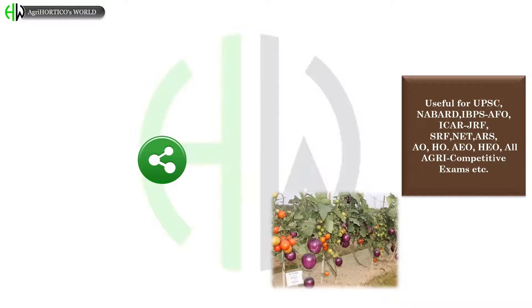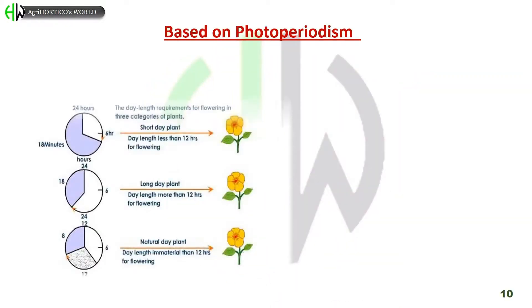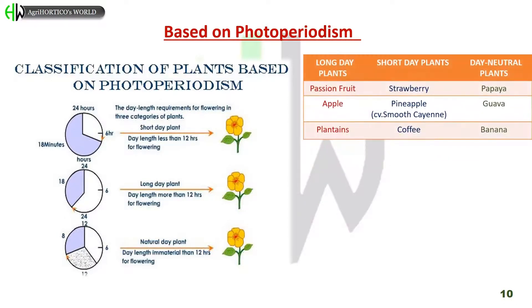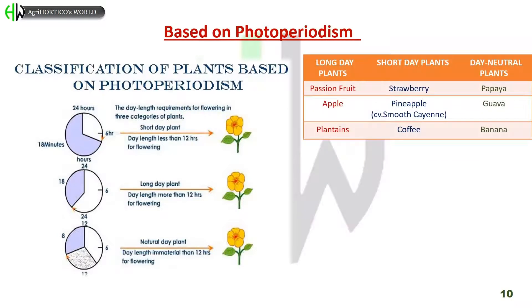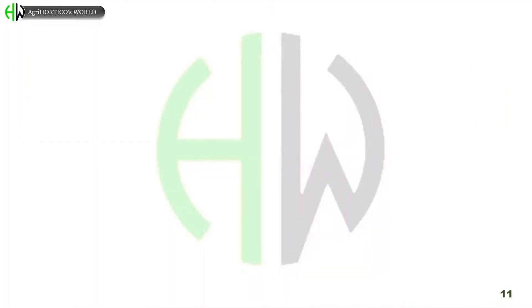Based on photoperiodism: long day plants are passion fruit, apple, and plantains. Short day plants are strawberry, pineapple cultivars, smooth cane, and coffee. Day neutral plants are papaya, guava, and banana.